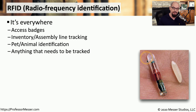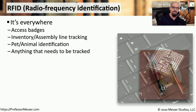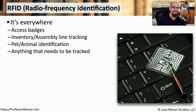Here is one type of RFID tag, right next to a grain of rice to give you an idea of how small some of these can be. The kind of RFID tag you commonly see in something like an ID card is the flatter version that you see here.